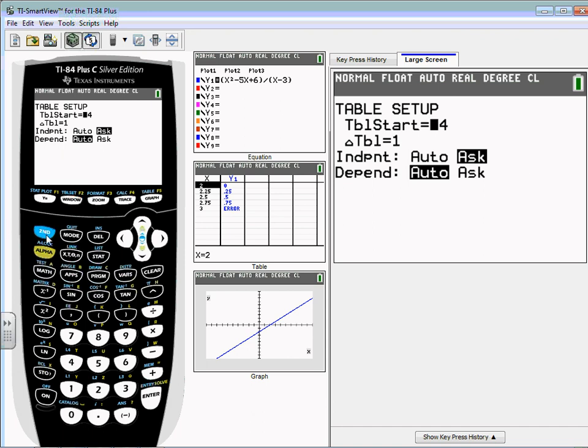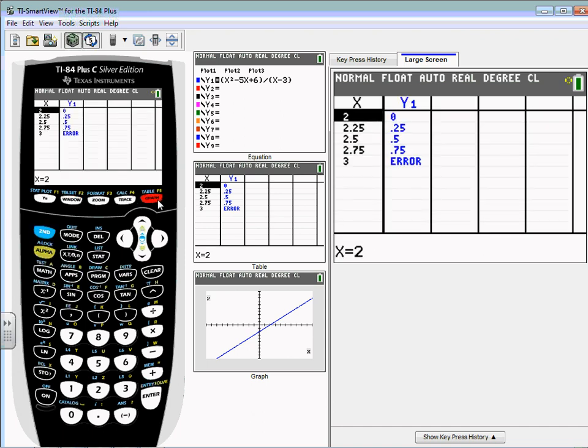If your independent is on Ask, go to your table of values - second graph. I'm going to do a reasonable interval: I'm going to look at 2, then 2.5, then 2.9, then maybe 2.99.